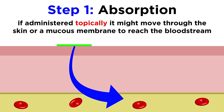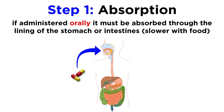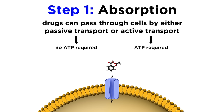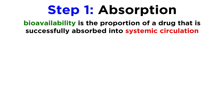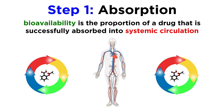If a drug is administered topically, this could mean moving through the skin or a mucous membrane, and subsequently through the walls of nearby blood vessels. If administered orally, this would mean being absorbed through the lining of the stomach or intestines, a process which would be slowed by the presence of food. Some drugs will pass through the cells that comprise these membranes by passive transport, others by active transport, but one way or another, they will make it through on the way to their destination. In describing this process, it will be appropriate to review the term bioavailability, which describes the proportion of a drug that is successfully absorbed into systemic circulation.